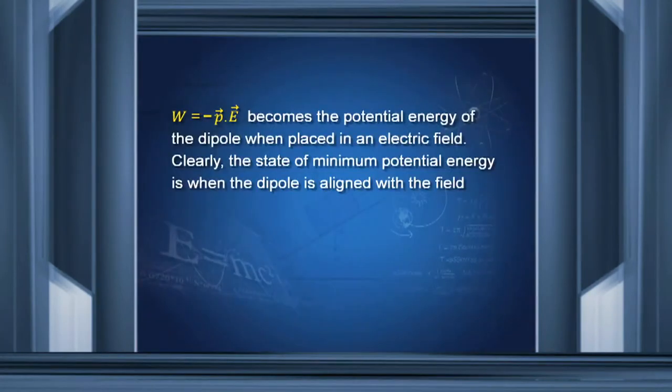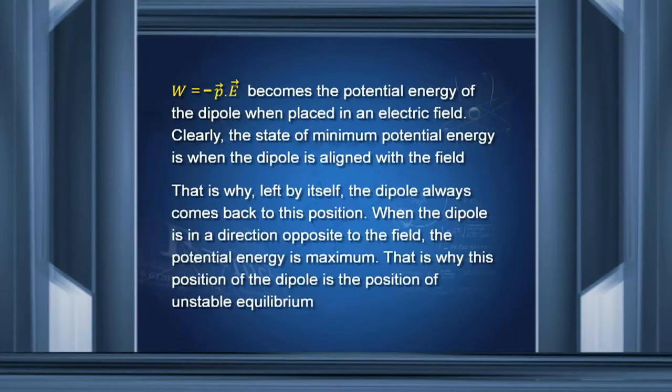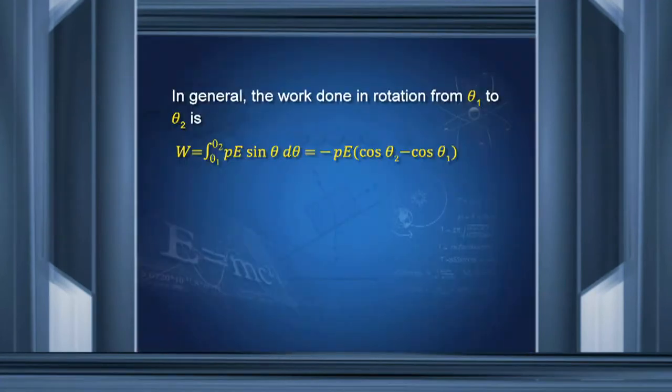Clearly, the state of minimum potential energy is when the dipole is aligned with the field — that is the position of stable equilibrium. Maximum potential energy occurs when the dipole is antiparallel. In general, the work done in rotating the dipole from θ₁ to θ₂ is ∫pE sinθ dθ = −pE(cosθ₂ − cosθ₁).